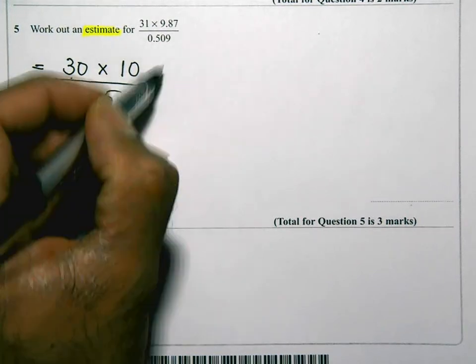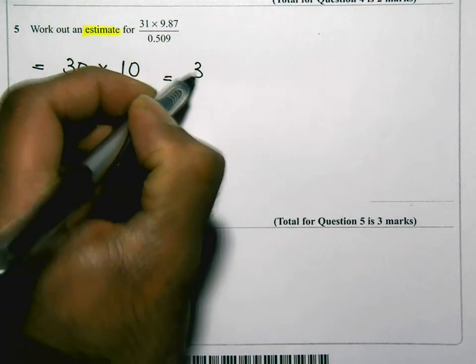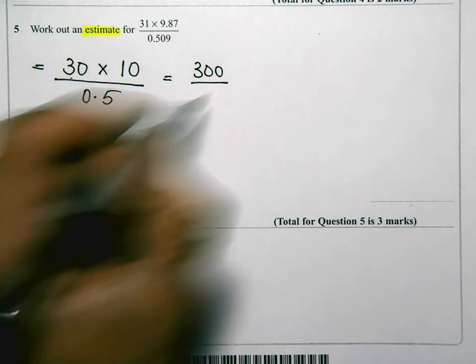Now as I work that out, 3 times 10 is 300. 300 divided by 0.5.